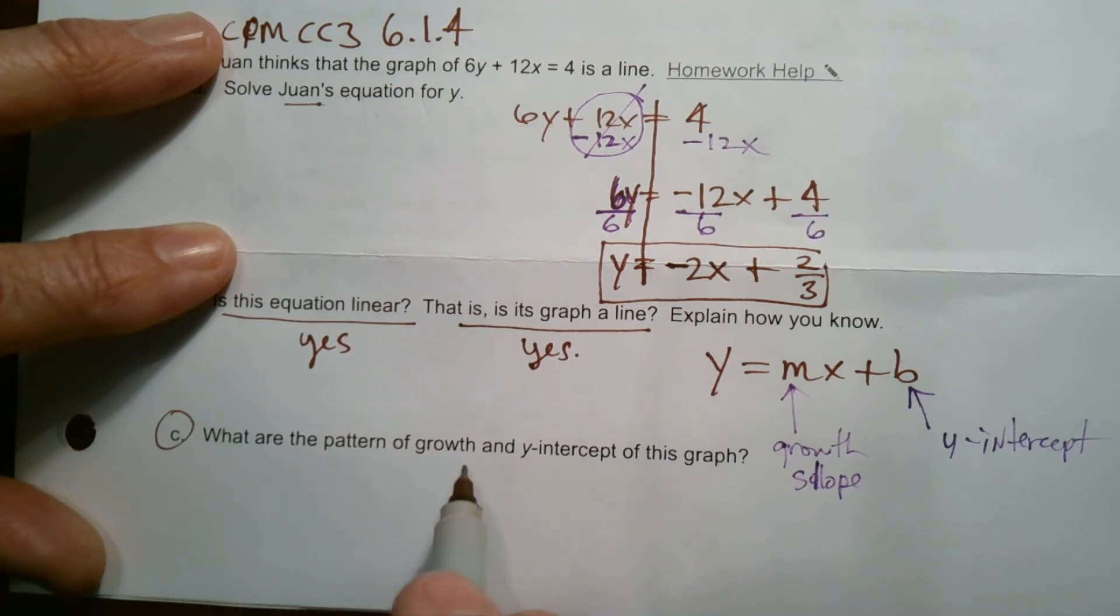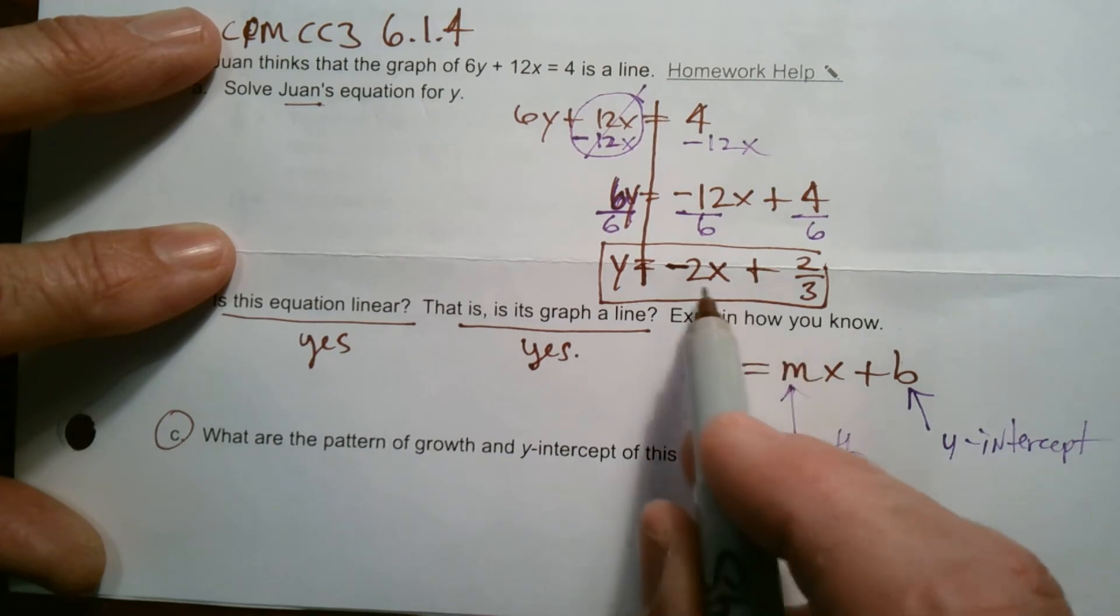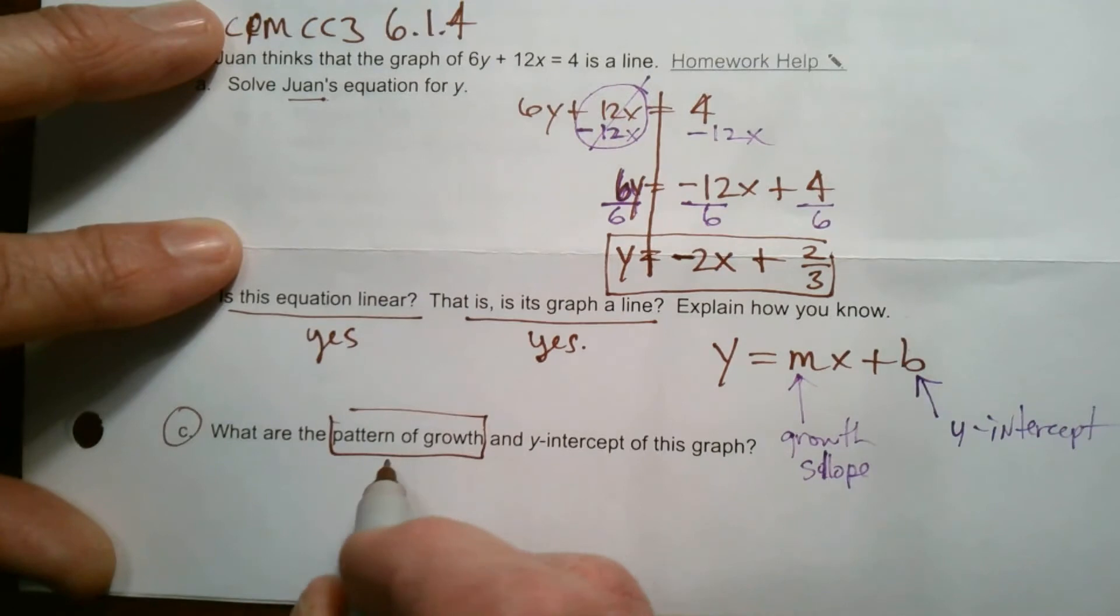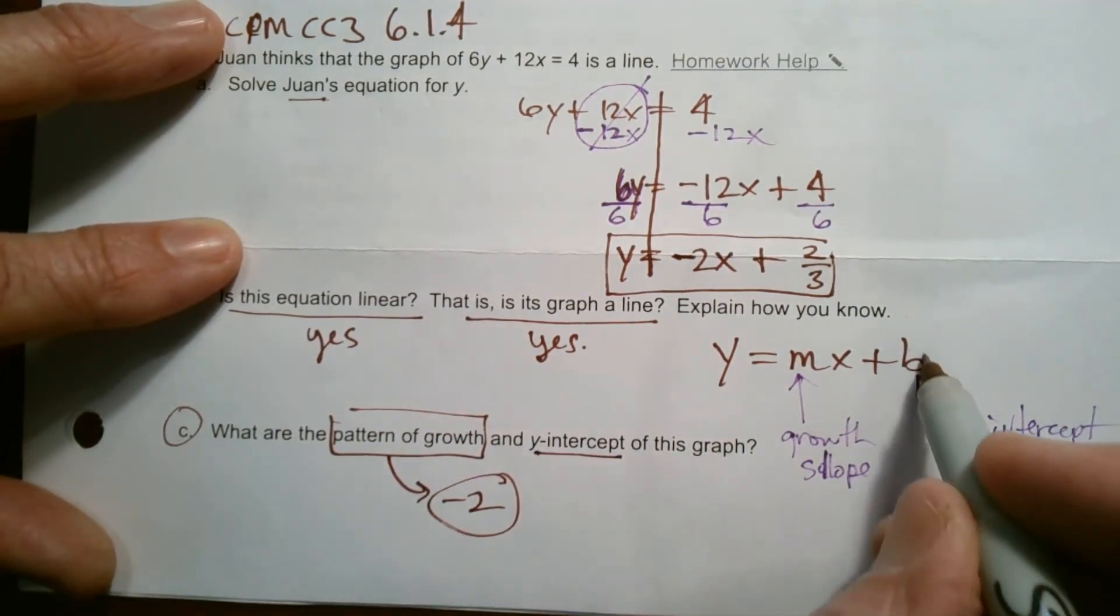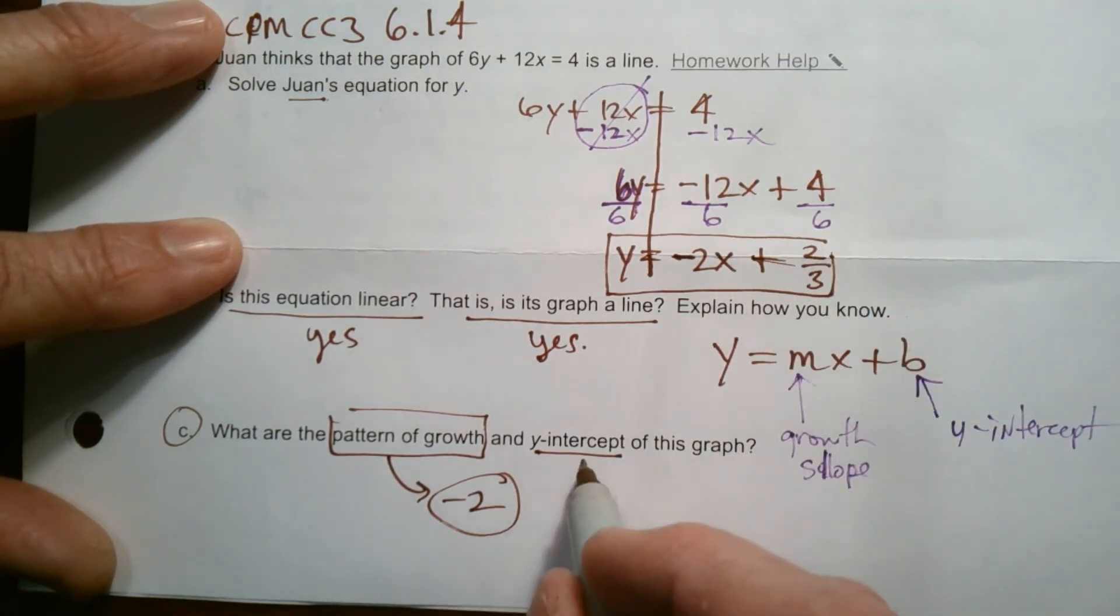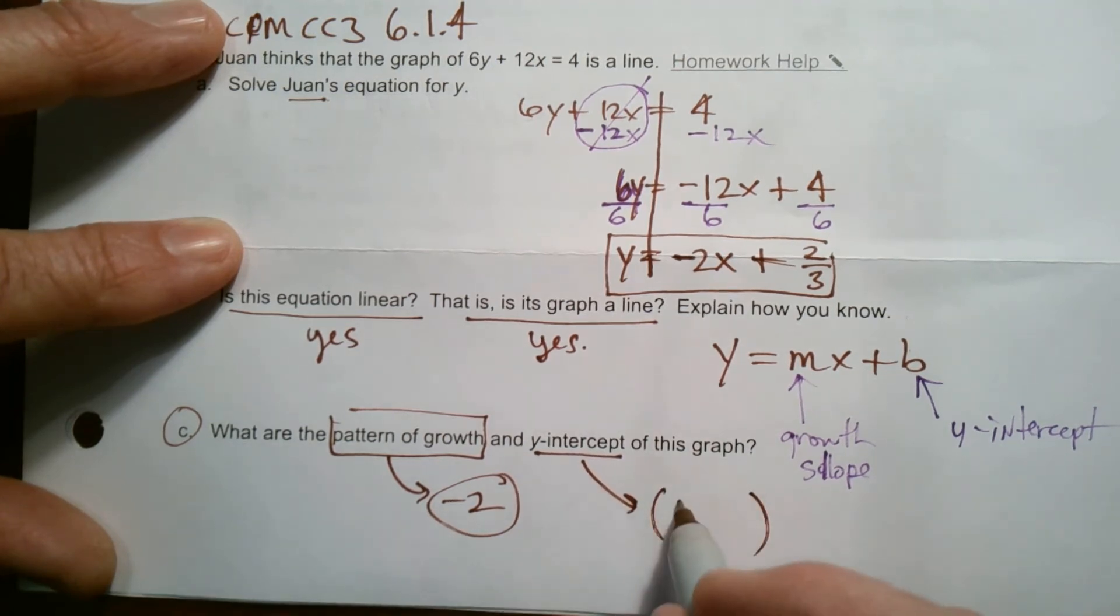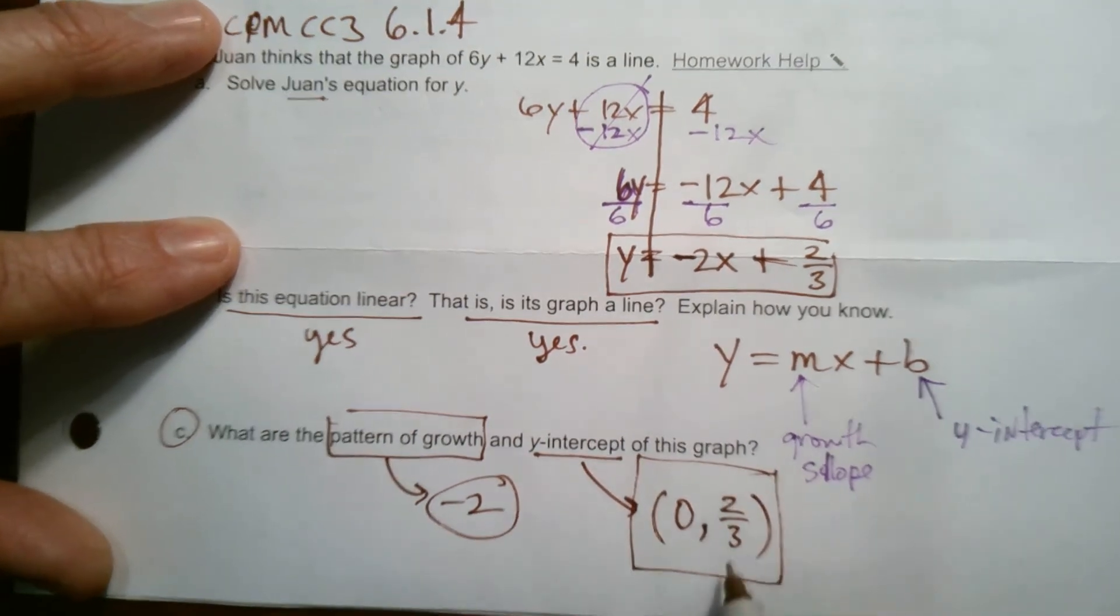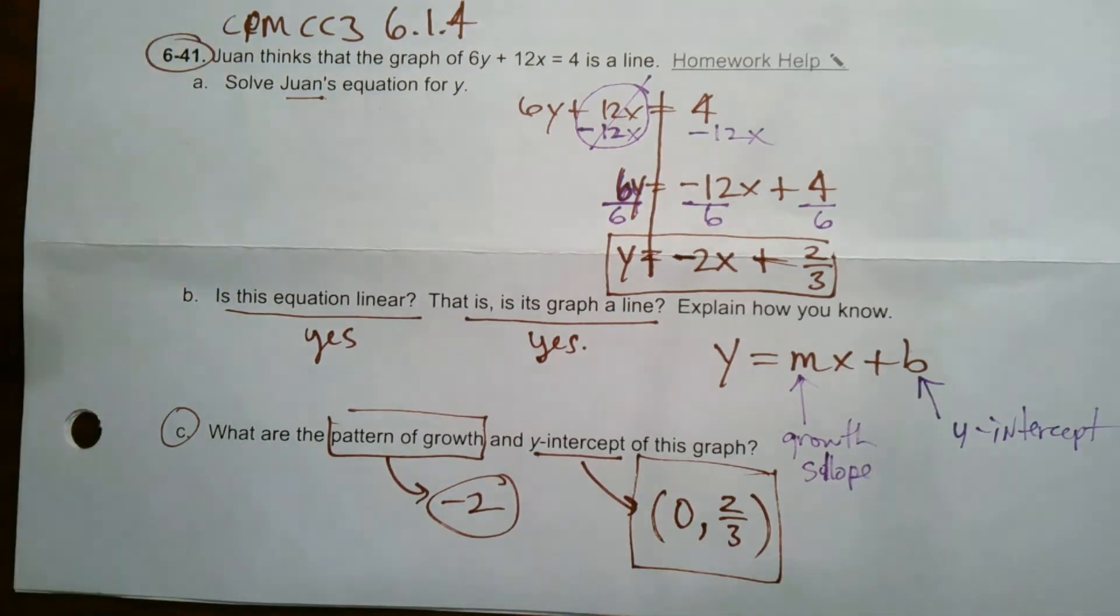So part c, what are the pattern of growth and the y-intercept? If I'm in this form, the number in front of the x, that negative 2, is the growth. So the pattern of growth is negative 2. And the y-intercept is the constant, plus 2 thirds. Remember, the y-intercept is a point where x equals 0, so it's 0, 2 thirds. That's the place where it crosses the y-axis.